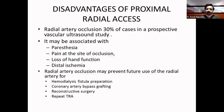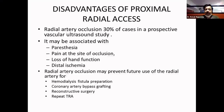Looking at the disadvantages of proximal radial access and why we should switch to distal radial: proximal radial artery interventions lead to occlusion in 30% of cases — in our experience, 20%. It is associated with paresthesia, pain at the site of occlusion, loss of hand function, and distal ischemia. Radial artery occlusion may prevent further use for hemodialysis fistula creation, coronary artery bypass, or further coronary interventions. Dorsal radial keeps the proximal radial artery patent, which can be used for bypass and reconstructive surgery in future.